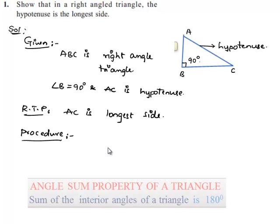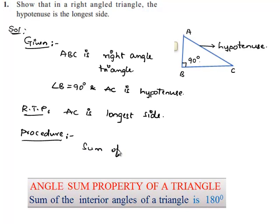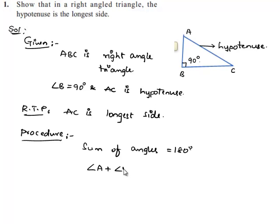In a right angle triangle, we know that the sum of angles is equal to 180 degrees. We can write angle A plus angle B plus angle C equals 180 degrees. Since angle B is 90 degrees, this implies angle A plus angle C equals 90 degrees.